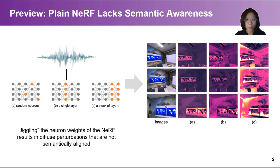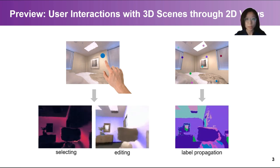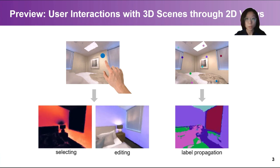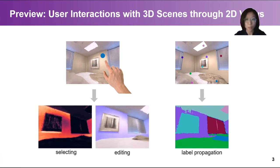For example, when adding random perturbations to the NERF's parameters, the whole scene responds. However, many user interactions with 3D scenes through observed 2D views require localized and semantically aware responses, as in selecting objects or object parts, editing the appearance of scene entities, and propagating labels to the whole 3D scene given sparse annotations.